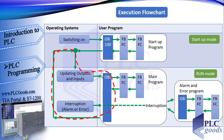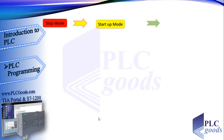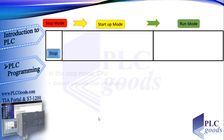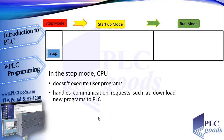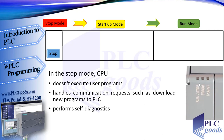So the CPU has three modes: stop, startup, and run. Let's see what the CPU does in each mode. In the stop mode, the CPU does not execute the user program. The CPU handles any communication requests as appropriate and performs self-diagnostics. In this mode, the run/stop LED will be off.